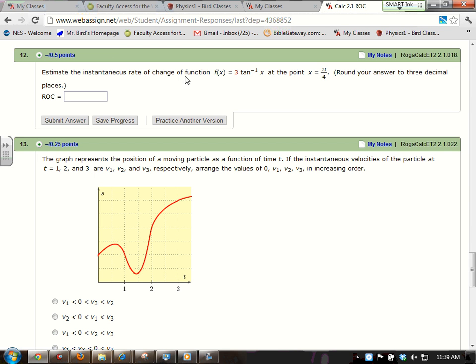Estimate the instantaneous rate of change of function f of x equals 3 inverse tangent of x at the point x equals pi over 2. Round your answer to three decimal places. Rate of change. So what is our instantaneous ROC, rate of change?